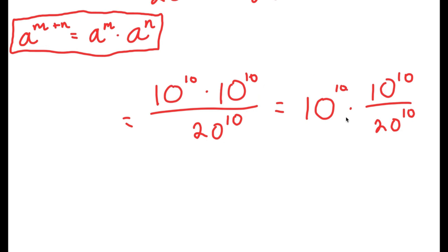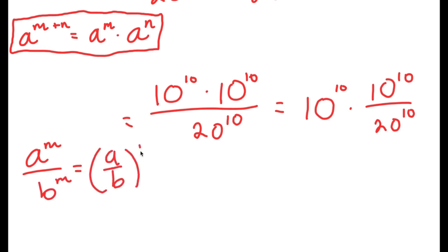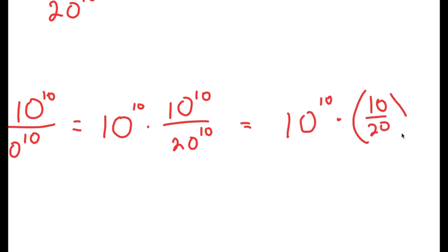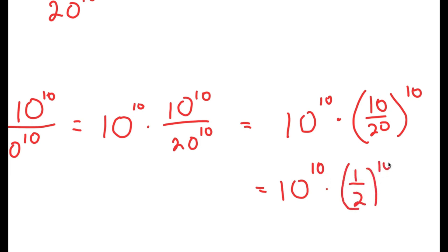I grouped 10 to the power of 10 over 20 to the power of 10, because this way I can use the property a to the power of m over b to the power of m is equal to a over b to the power of m. So this turns into 10 to the power of 10 times 10 over 20 to the power of 10, which is equal to 10 to the power of 10 times one half to the power of 10.